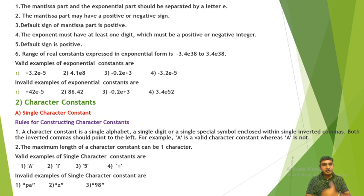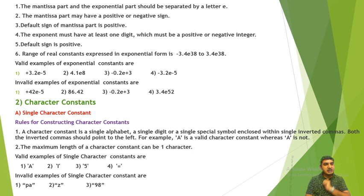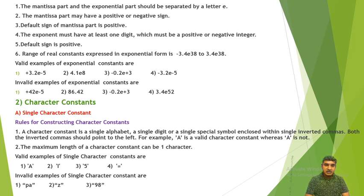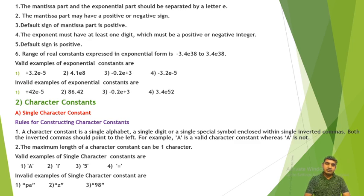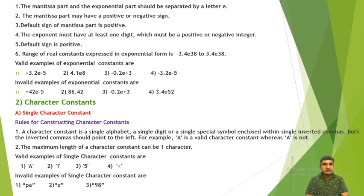Invalid example of exponential constant: plus 42e-5 — invalid because it does not consist of a decimal point in the mantissa. The other examples listed were actually valid examples. Note that 3.4e52 is also a valid exponential constant.